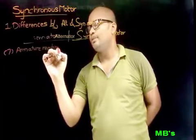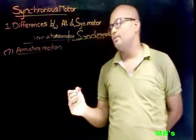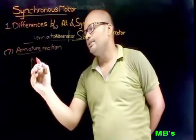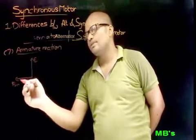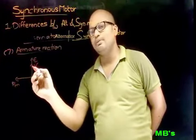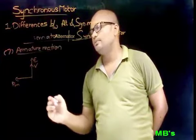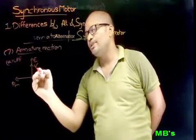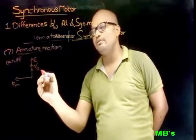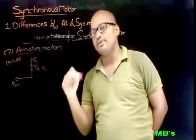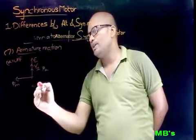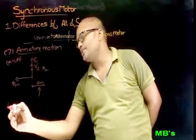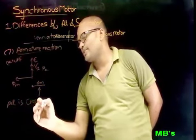The next important difference is armature reaction, defined as the effect of armature flux on main flux. In the case of the alternator at unity power factor, if the induced EMF, main flux, and terminal voltage V are considered, the current is in phase with V. Due to this current there is armature flux phi_A, and the armature flux is crossing the main flux — so the armature reaction is a cross-magnetizing effect.